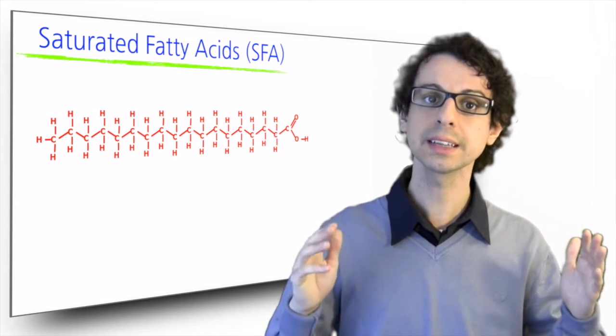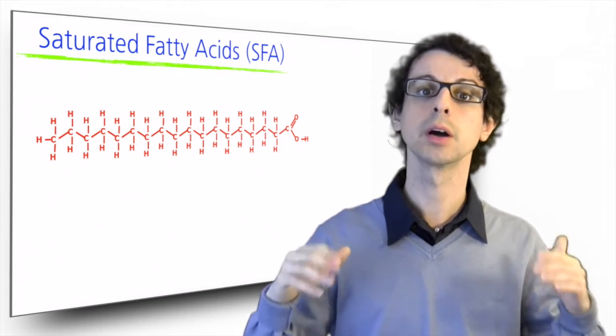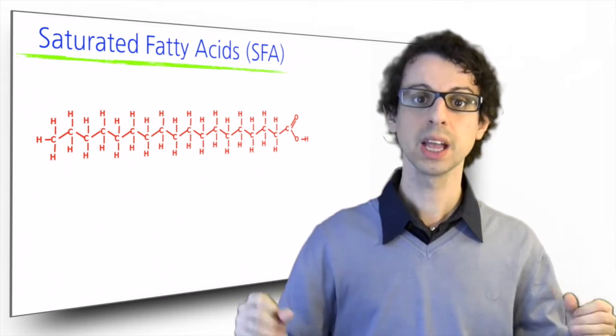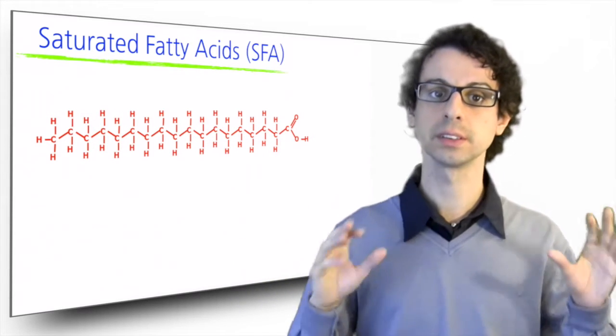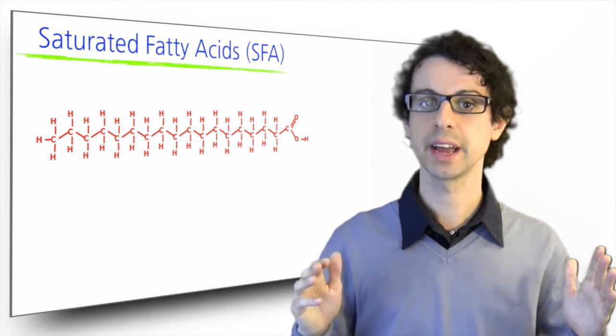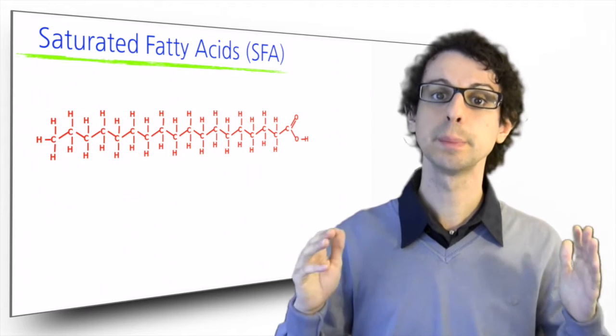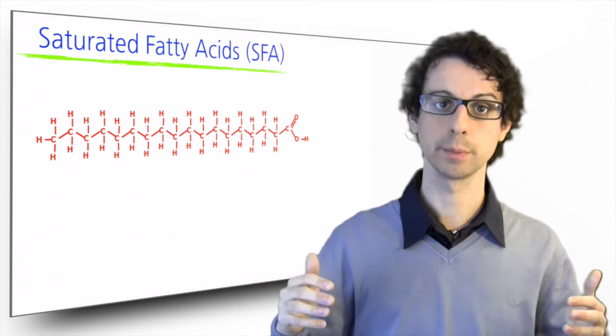However, there is much less oxygen in fatty acids, and chemically this means they are more reduced, which is why they contain more energy. If we count the number of carbons in this molecule, we will count 18. This number can vary, and the difference between the different saturated fatty acids depends on the length of their carbon chain.